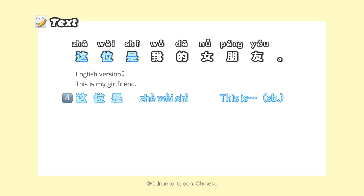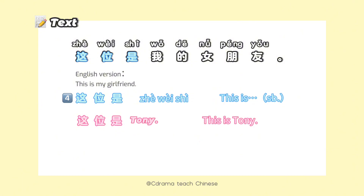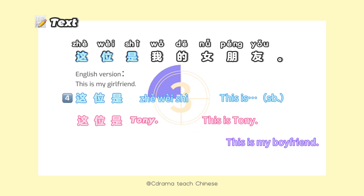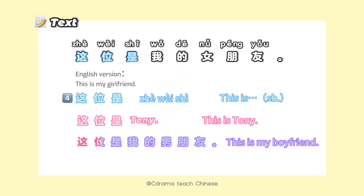这位是 — when we want to introduce someone, we could say 这位是. For example, 这位是Tony means 'this is Tony.' Now let's think about how to say 'this is my boyfriend' in Chinese: 这位是我的男朋友.